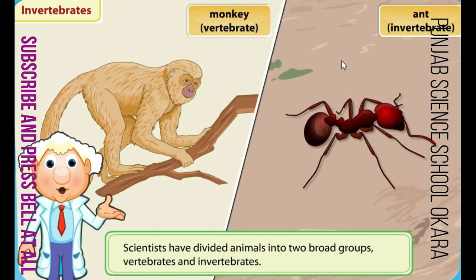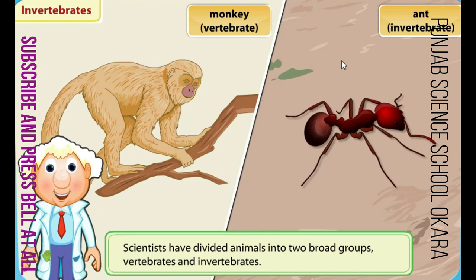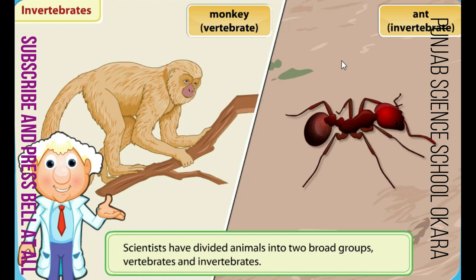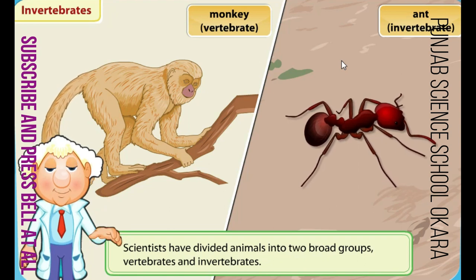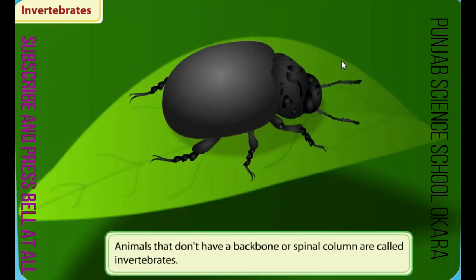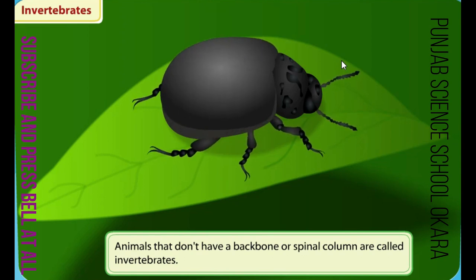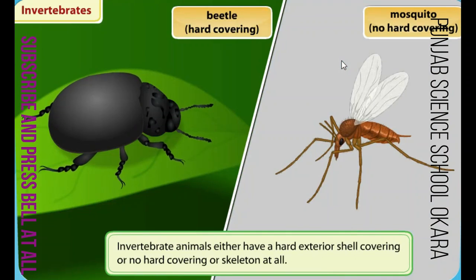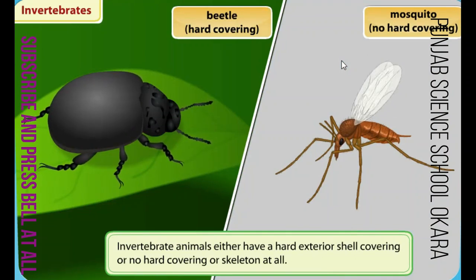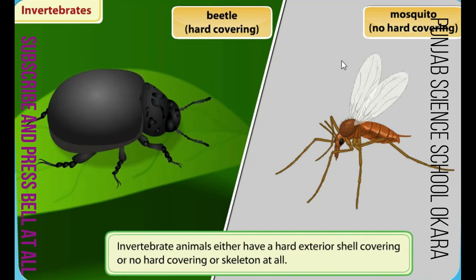We know that scientists have divided animals into two broad groups: vertebrates and invertebrates. Here we will discuss invertebrate animals. Animals that don't have a backbone or spinal column are called invertebrates. Invertebrate animals either have a hard exterior shell covering or no hard covering or skeleton at all.